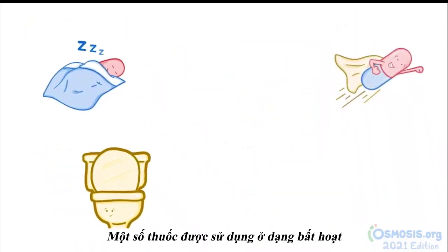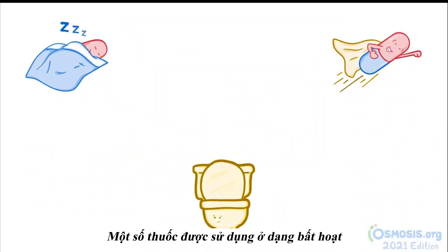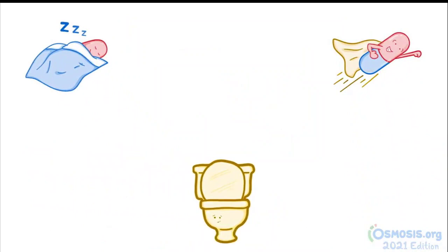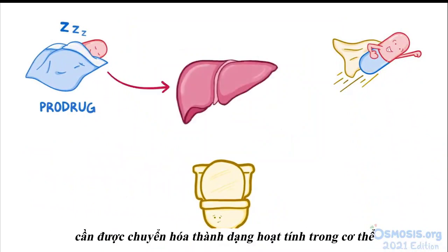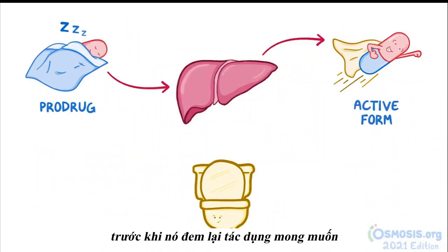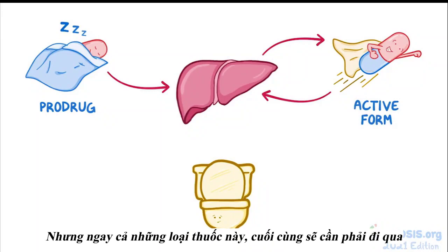Some medications, though, are administered in an inactive form, also known as a prodrug, which needs to be metabolized into an active form within the body before they can produce the desired effect.